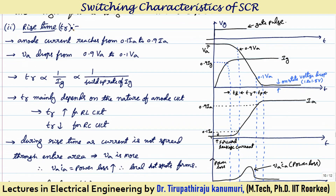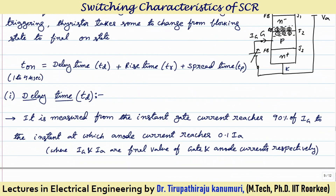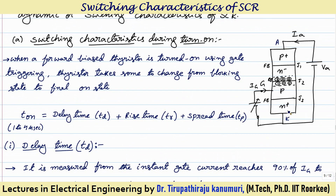Rise time is the time during which the anode current rises from 0.1 times Ia to 0.9 times Ia. Alternatively, the voltage drop across the SCR decreases from 0.9 times Va to 0.1 times Va. During this period, the current passing from anode to cathode does not spread directly to the entire area — initially it passes over a narrow area, so the current density is high and the resistance is more, causing a higher voltage drop.